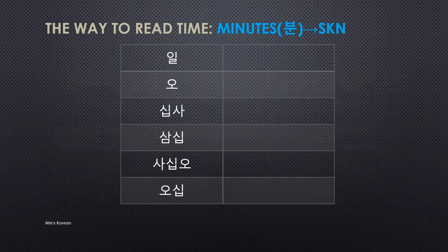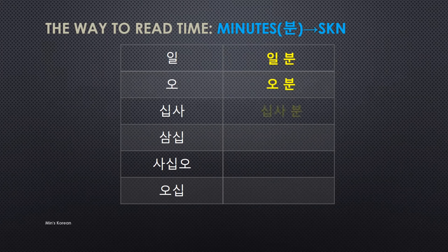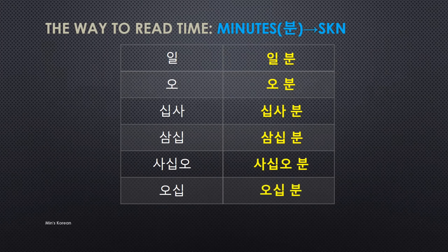Then next, minutes — 분. When you say minutes, you have to use Sino-Korean numbers. So: 일 is 1, 오 is 5, 십사 is 14, 삼십 is 30, 사십오 is 45, 오십 is 50. To say one minute, just say 일 and 분 together — 일 분. You don't need to change the spelling. So: 오 분 is 5 minutes, 십사 분 is 14 minutes, 삼십 분 is 30 minutes, 사십오 분 is 45 minutes, 오십 분 is 50 minutes. Quite easy!